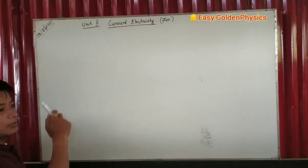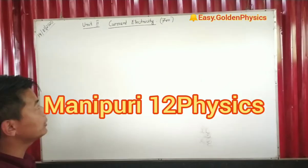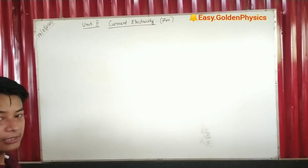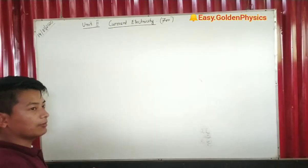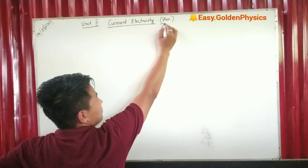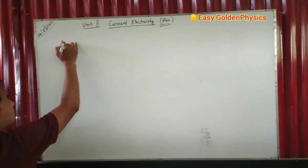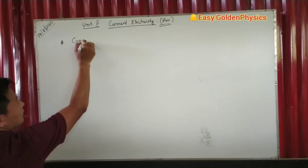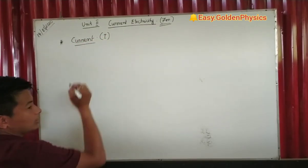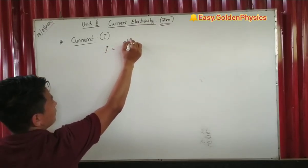In this video, we are going to show you how to use electric current. The electric current is the source of the brain. The current is the 7th mark. The current is the symbol of the eye — the current is the rate of flow of electric charge.